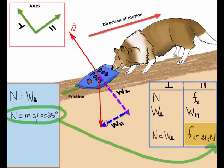Since we have N in both formulas, and we're looking for the coefficient of friction, we can substitute N equals mg cosine 25 degrees into our friction formula.